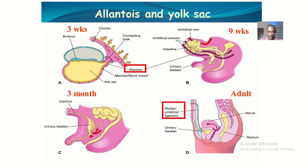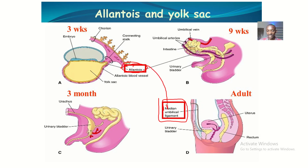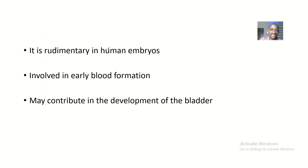So you can see this is the Allantois, circled in red, and you can see the median umbilical ligament is also circled in red, showing us that the Allantois ultimately becomes the median umbilical ligament. But not only that — we're talking about all the parts that the Allantois actually regresses to form.